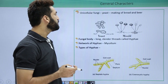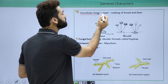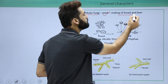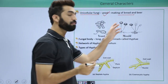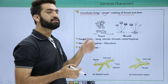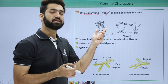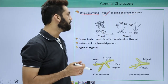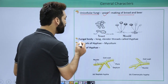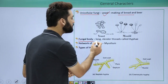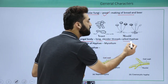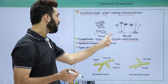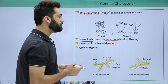Unicellular fungi, as already mentioned, is yeast — Saccharomyces cerevisiae — which is used for the manufacturing of bread and beer. When you look at the fungal body, it is long and slender, consisting of threads called hyphae.